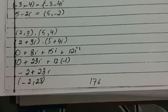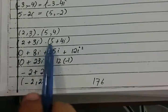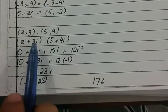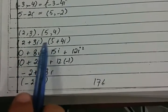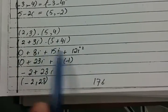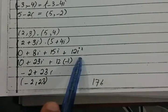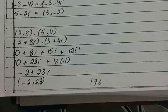2 multiplied by 5 is 10. 2 times 4 is 8. 3 times 5 is 15. 3 times 4 is 12. And iota times iota becomes iota squared.